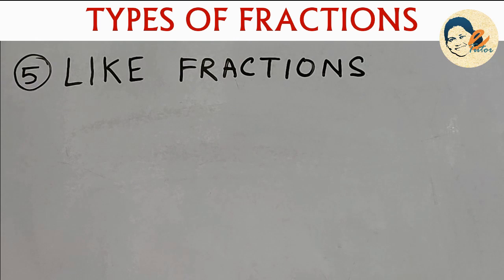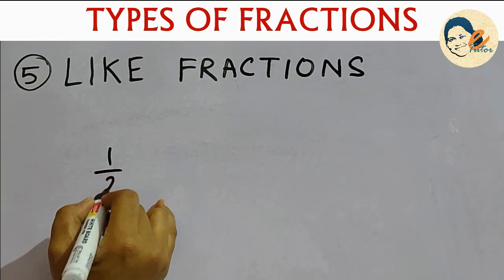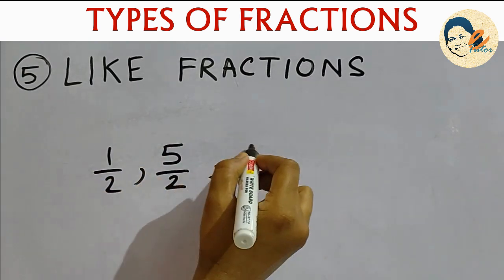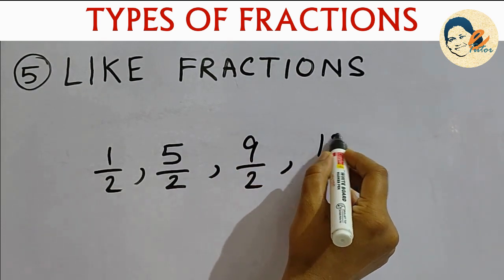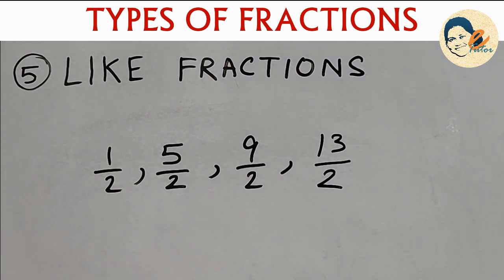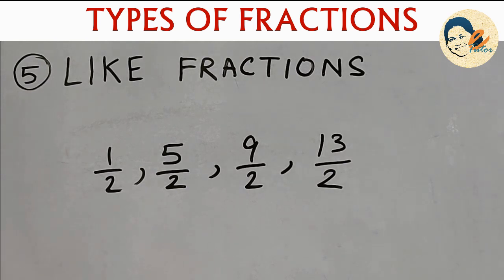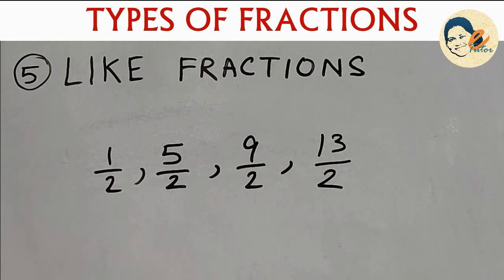Our next type of fraction is like fractions. Fractions which have the same denominators are called like fractions. For example, 1/2, 5/2, 9/2, 13/2 — all of these fractions have the same denominator 2, so this set is called like fractions. Simplification of this type is very easy because for addition or subtraction you just work on the numerators only. I will describe addition and subtraction of fractions in detail in my next video.